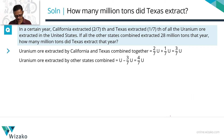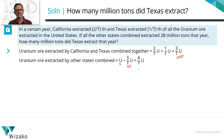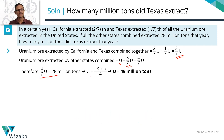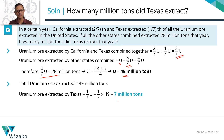To quickly summarize: the fraction extracted by California and Texas together is three sevenths of U. So the fraction extracted by all the other states is the total minus those two, leaving four sevenths of U. We know the other states together extracted 28 million tons, so 28 million tons equals four sevenths of U, giving us U equal to 49 million tons. Texas extracted one seventh of this value, which is seven million tons. Choice B is the correct answer.